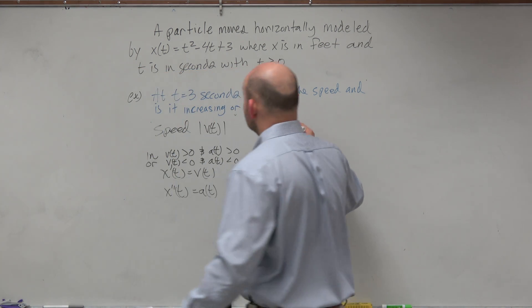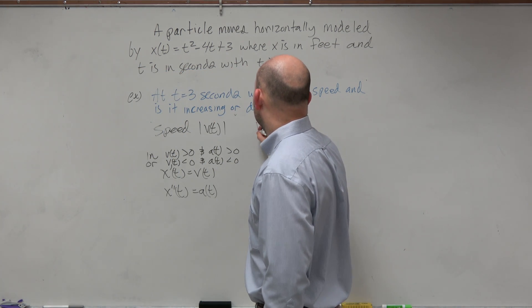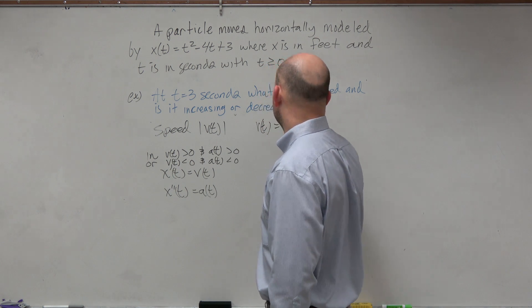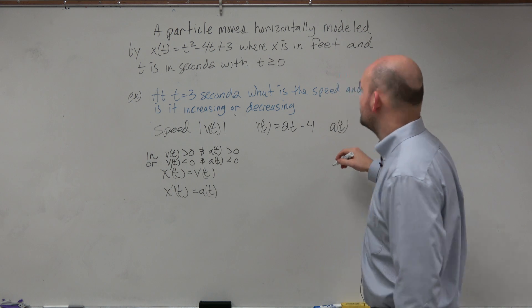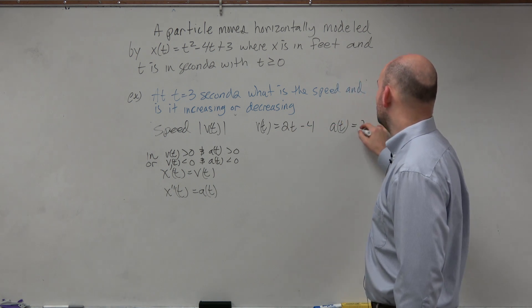And then just make sure we define these as well. So we're looking at t equals 3 seconds. So the first thing you want to do is find v sub t, which is just going to be the derivative, which is 2t minus 4. And then a sub t is just going to be the derivative of that, which is equal to 2.